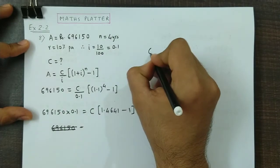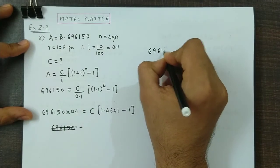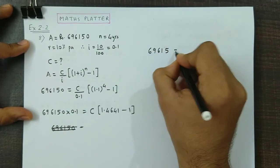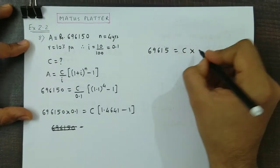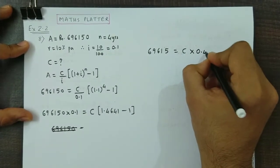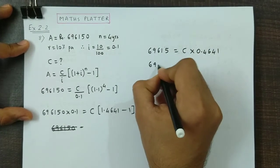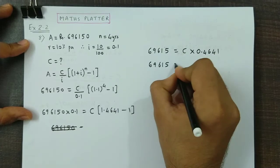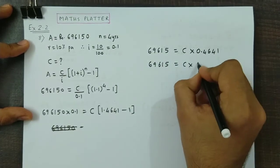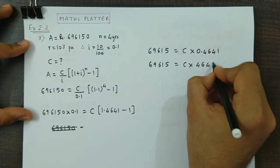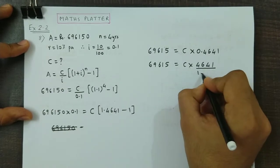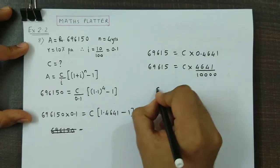So, 69615 is equal to C into, now this difference is 0.4641. So, 69615 is C into 4641 divided by 10,000.